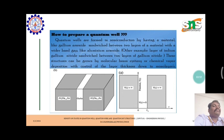How to prepare a quantum well? Quantum wells are formed in semiconductors by having a material like gallium arsenide sandwiched between two layers. This quantum well material is like a sandwich with two different types of material. Two layers of a material with a wider band gap like aluminum arsenide. Other examples are layers of indium gallium nitride and gallium nitride. These structures can be grown by molecular beam epitaxy or chemical vapor deposition with control of the layer thickness down to mono layers.